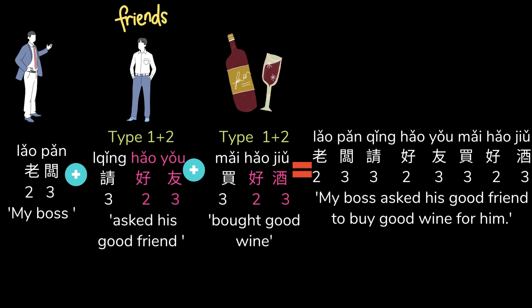The phrase may even be extended: 老板请好友买好久. There are three elements to this sentence: 老板, 请好友, and 买好久. The tone of the first portion is second-third. The second part, 请好友, is the one-plus-two type and is pronounced third-second-third. The third component, 买好久, is also one-plus-two and is pronounced third-second-third. Thus the whole sentence is read as second-third, third-second-third, third-second-third: 老板请好友买好久.